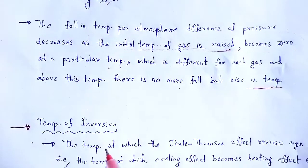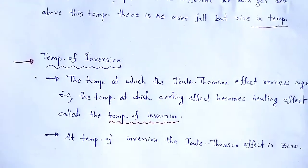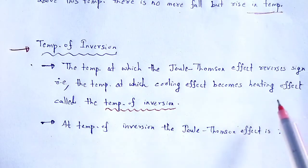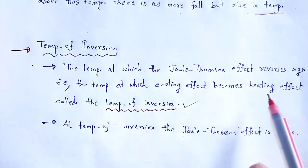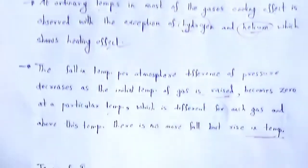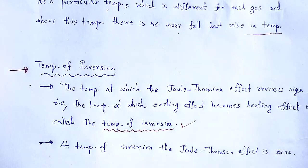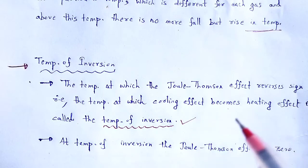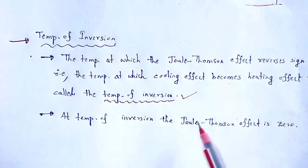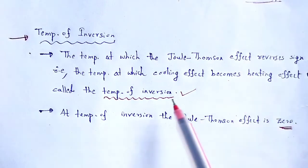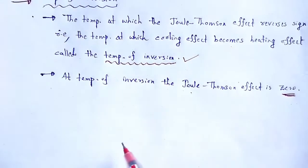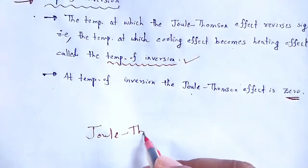Now the concept of temperature of inversion is taken into consideration. The temperature of inversion is the temperature at which the Joule-Thomson effect reverses sign — that is, the temperature at which the cooling effect becomes a heating effect. At the temperature of inversion, the Joule-Thomson effect is zero.